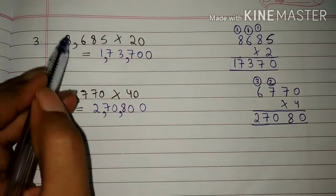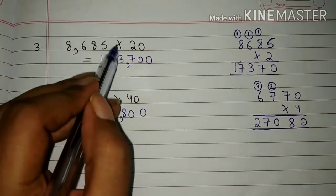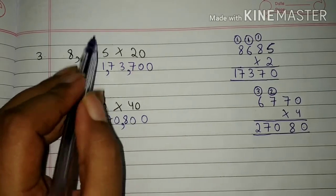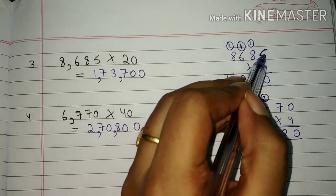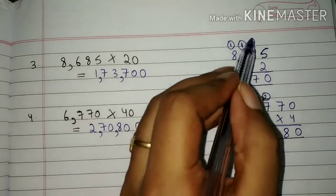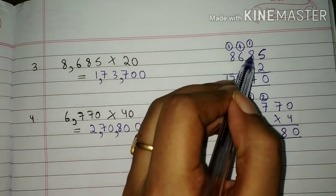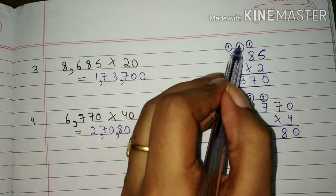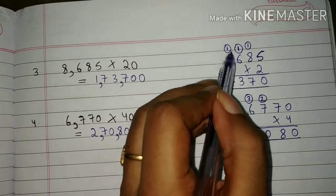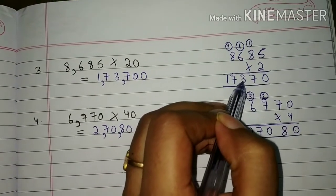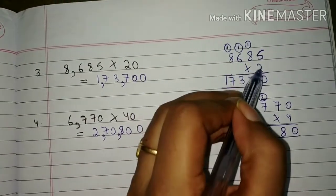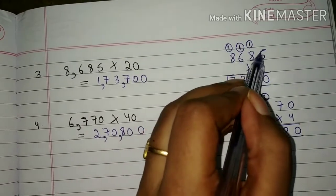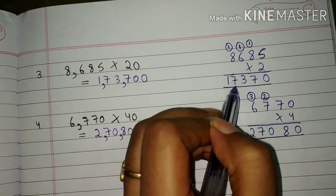Third question: 8,685 into 20. Students, first we will multiply 8,685 by 2. So 2 into 5 is 10. 0 we have written here and 1 will be carry. 2 into 8 is 16 plus 1 is 17. 7 we have written here and 1 will be carry. 2 into 6 is 12 plus 1 is 13. 3 we have written here and 1 will be carry. So 8,685 multiplied by 2 will give 17,370.